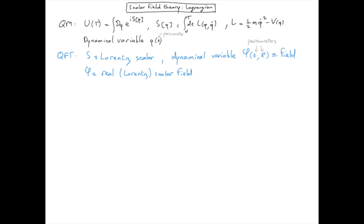So the action is a functional of phi. And as before, I can define a Lagrangian by writing the action as a time integral of this Lagrangian. Written like that, it looks like we have only one dynamical variable, phi. But keep in mind that, in fact, we have an infinite number of dynamical variables. That's the time dependence of phi for each point of space.